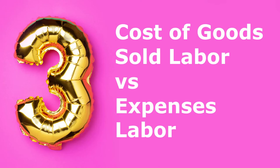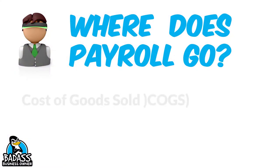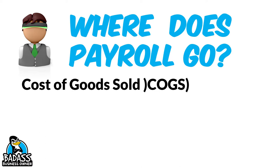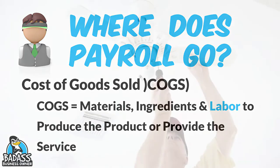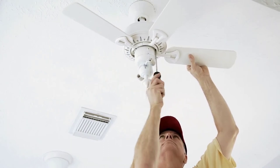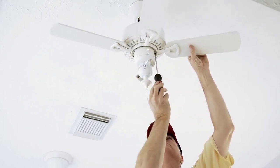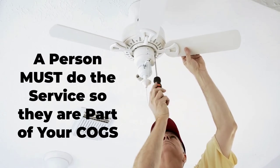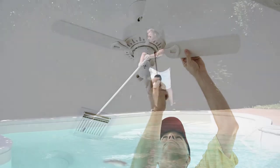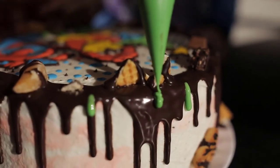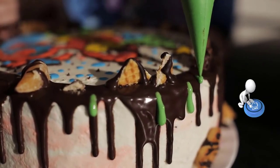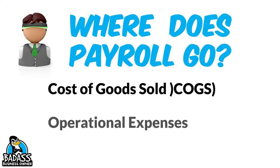There are different roles your employees will have in your business. For most of you, your labor hours will be captured in your cost of goods. Your cost of goods is any material or ingredients you use plus any labor hours you use to provide the service or to create the product. For example, if you are a handyman, you charge for the parts and the labor to do the job. A customer is paying for a person to install a ceiling fan — there is no way to install the ceiling fan without a person, therefore there are labor hours involved. Same with pool cleaning; a person has to physically do the cleaning. If you bake cakes, there are ingredients, but it still takes a person to actually create and decorate the cake. Therefore, there are labor hours that are put into the cost of goods sold.